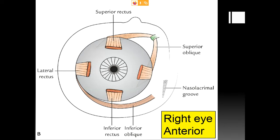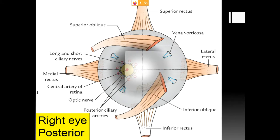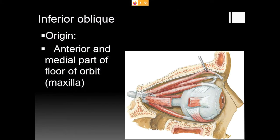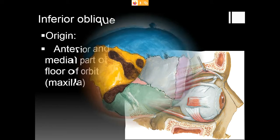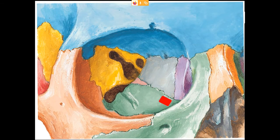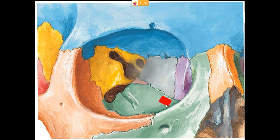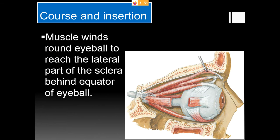The inferior oblique originates from the anterior and medial part of the floor of the orbit — the orbital surface of the maxilla. The muscle winds around the eyeball to reach the lateral part of the sclera, behind the equator of the eyeball, encircling the entire inferior part of the eyeball.